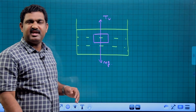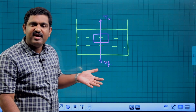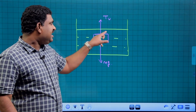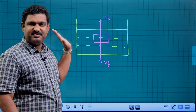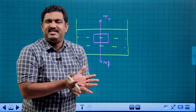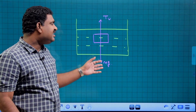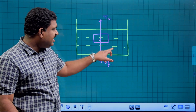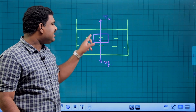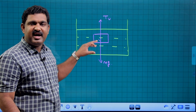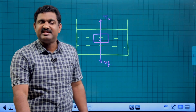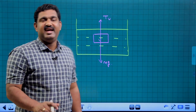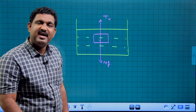In this situation, if you look at this body, there is a loss of weight because of the upthrust. If you look at the total weight, there is the weight of the body immersed, plus weight of the liquid, plus weight of the beaker.